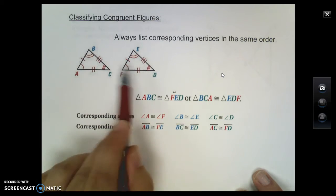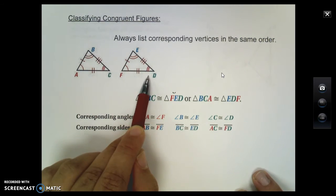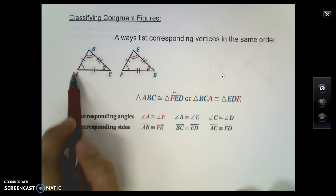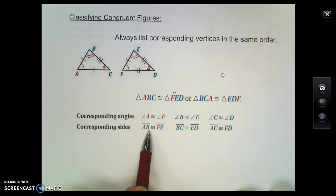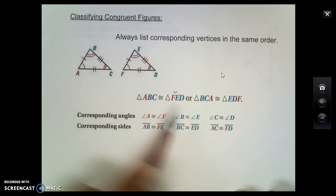So for example, angle A and angle F are congruent, angle B and angle E are congruent, and lastly C and D are congruent, as these are labeled down here. In addition to that though, the corresponding sides are also congruent, which means that AB and FE are the same, BC and ED are the same, and lastly AC and FD are the same.